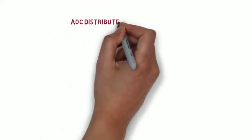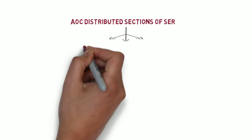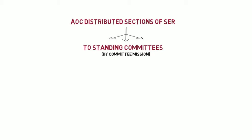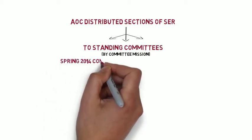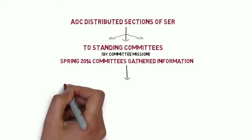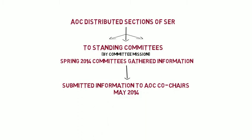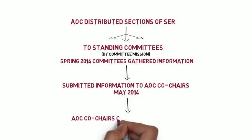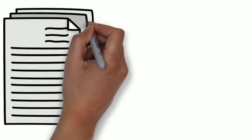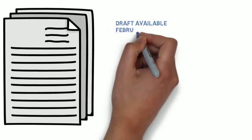As requested by the SCC, the Accreditation Oversight Committee distributed sections of the self-evaluation report to each standing committee based on each committee's mission, for initial information collection. During the spring of 2014, members of the standing committees gathered information and evidence and submitted them to the co-chairs of the AOC in May 2014. The AOC co-chairs spent the summer collating that information to form the foundation of the self-evaluation report. A full written draft will be completed and distributed to the campus community in February 2015.